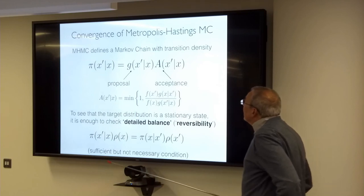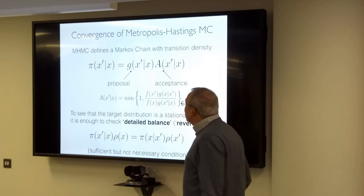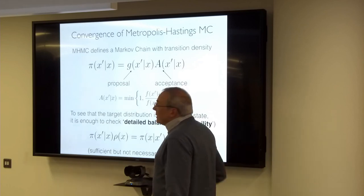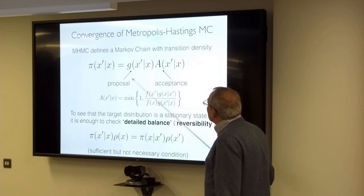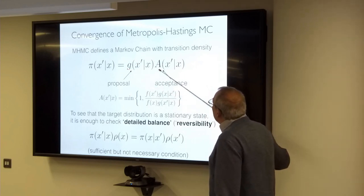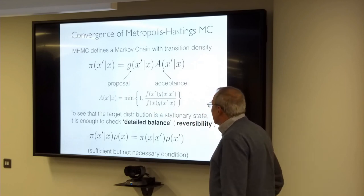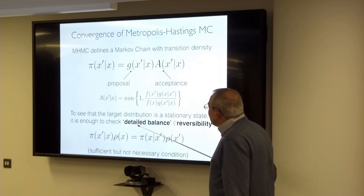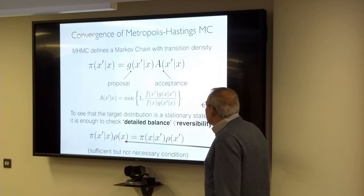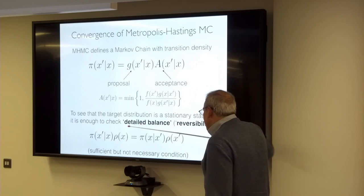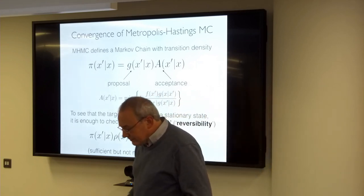The Metropolis-Hastings Monte Carlo method defines a Markov chain with a specific transition density. G is the proposal distribution and a is the acceptance distribution. You can check detailed balance for this transition density. For the target distribution, you just need this criterion satisfied — it's a sufficient but not necessary condition. There are other ways to achieve it, but this is the easiest.